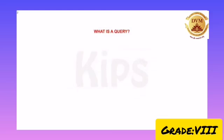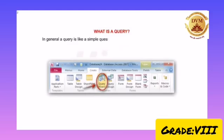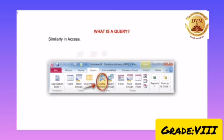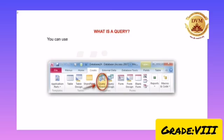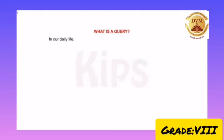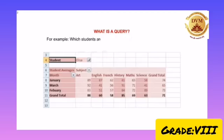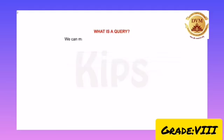What is a query? In general, a query is like a simple question that we ask to find specific information from the database. Similarly, in Access, when you build a query, you define specific search conditions. You can use queries to view, change, summarize, and analyze specific data in different ways. In our day-to-day life, we form several types of queries to get specific information — for example, which students are scoring above 85 marks, which students live in sector 4, and so on. We can make decisions depending on the criteria.